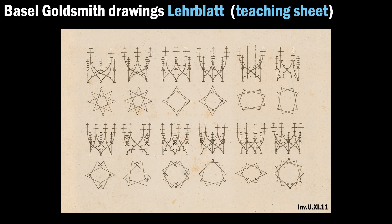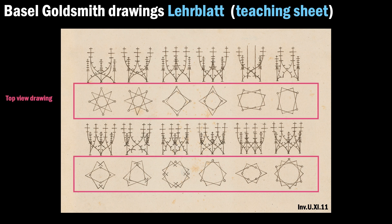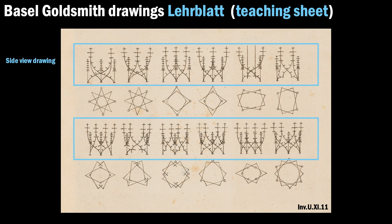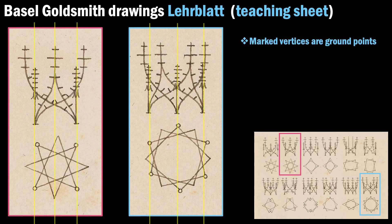We begin with a specific Basel goldsmith drawing known as the teaching sheet. This is the only surviving drawing that includes 12 examples with paired top and side views. The teaching sheet serves as our Rosetta stone, providing the following insights.